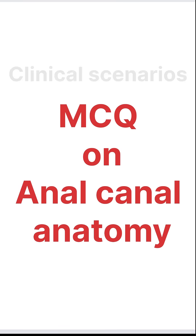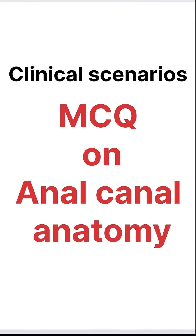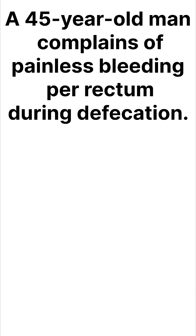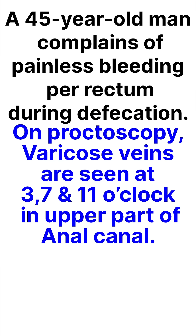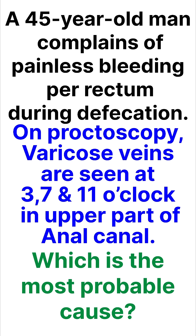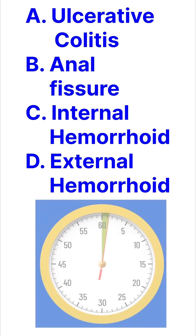A clinical scenario-based MCQ on anal canal anatomy: a 45-year-old man complains of painless bleeding per rectum during defecation. On proctoscopy, varicose veins are seen at 3, 7, and 11 o'clock positions in the upper part of the anal canal. Which is the most probable cause? Ulcerative colitis, anal fissure, internal hemorrhoid, or external hemorrhoid.